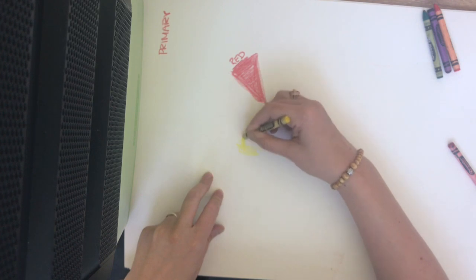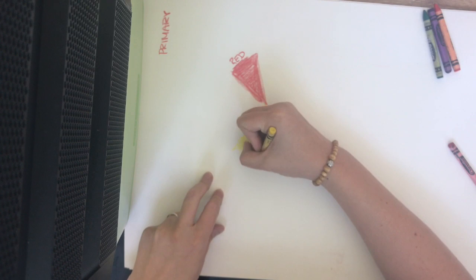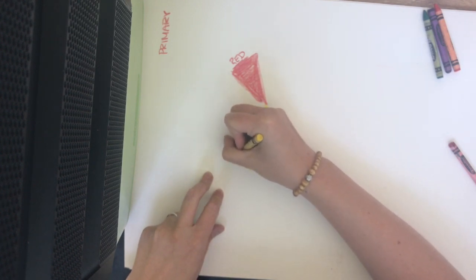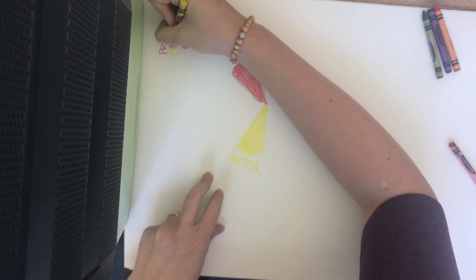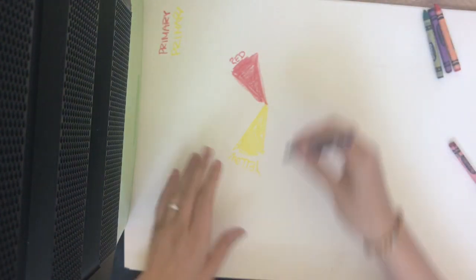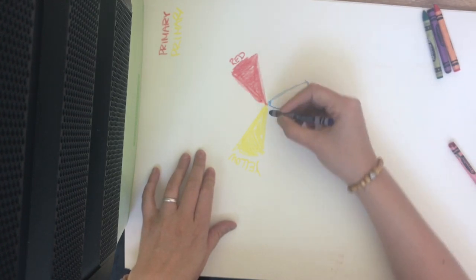They don't have a specific order. I'm just using this one today. Partially because that's the one that came out of my hand second. Yellow, I'm writing upside down, is another primary color. Then we have blue. Blue is our third and final primary color.